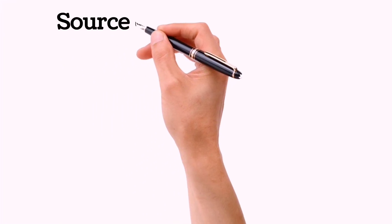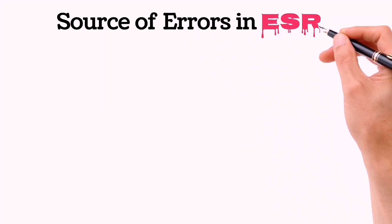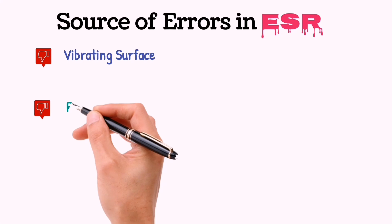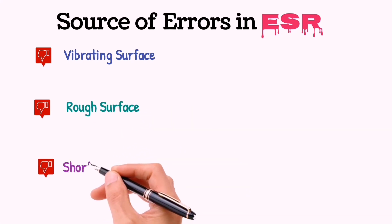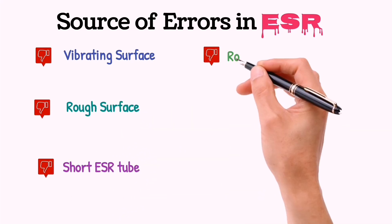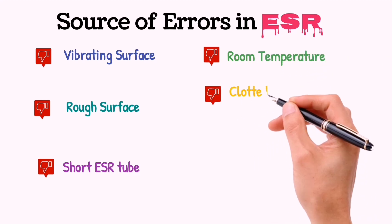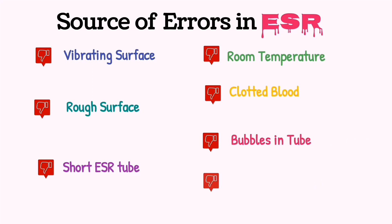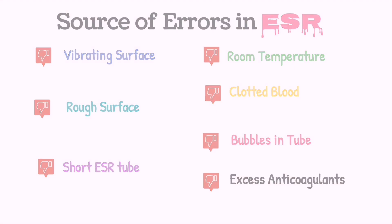Now let's discuss some sources of errors in ESR. These can be a vibrating surface, rough surface, short ESR tube, room temperature, clotted blood, bubbles in the tube, and excess anticoagulant used in tubes. Thank you for watching.